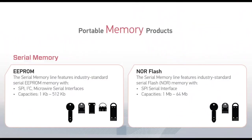Next, I would like to give you a quick overview of our three main product families. First is the DataKey serial memory family. Serial memory products are offered with either serial EEPROM or serial NOR Flash memory. Our EEPROM-based products are available in capacities from 1 kilobit to 512 kilobits, with serial interface options including SPI, I2C, and microwire. Our NOR Flash-based products are available in capacities from 2 megabits to 64 megabits and have an SPI serial interface.